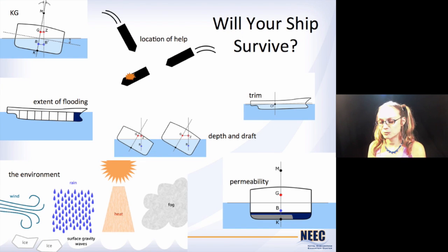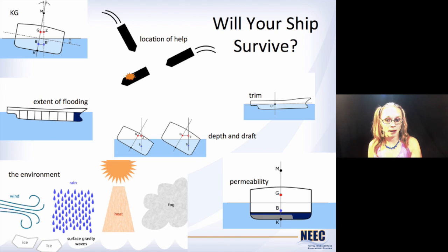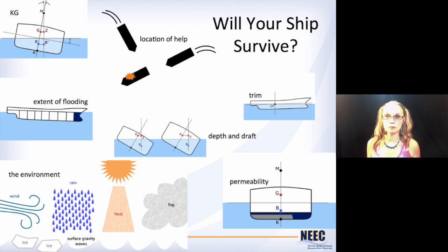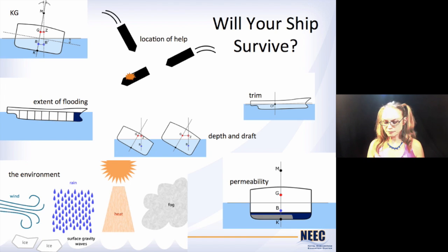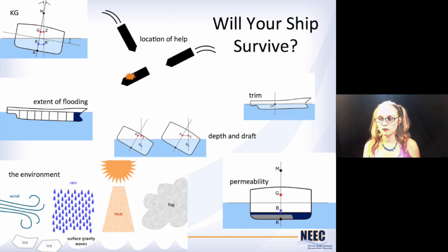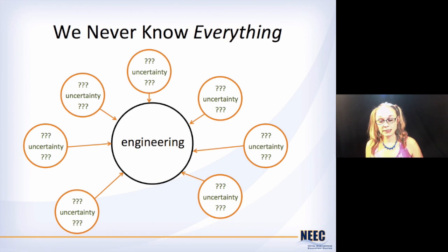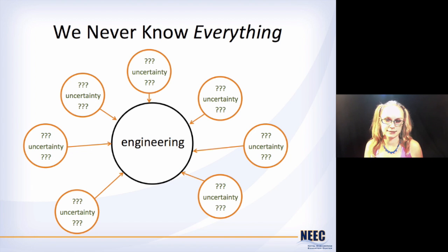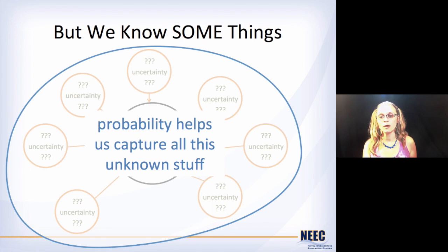For a ship to survive, we know it depends on a bunch of things: the KG, the trim, permeability of the compartments that got flooded, how many of them got flooded, and the environmental conditions. Is it a nice clear day where lots of ships can see you and come to your rescue, or is everything obscured by rain and fog? How far away is help? All that stuff is going to factor into how your ship survives. But that's really complicated — a lot of stuff to think of, and if you're trying to compare designs that's too much. We need one number to look at. In engineering, we're never going to know everything; there's uncertainty all around us, but we still need to account for it to make designs we have confidence in. Probability theory is what we use to capture all this uncertainty and still make good designs.